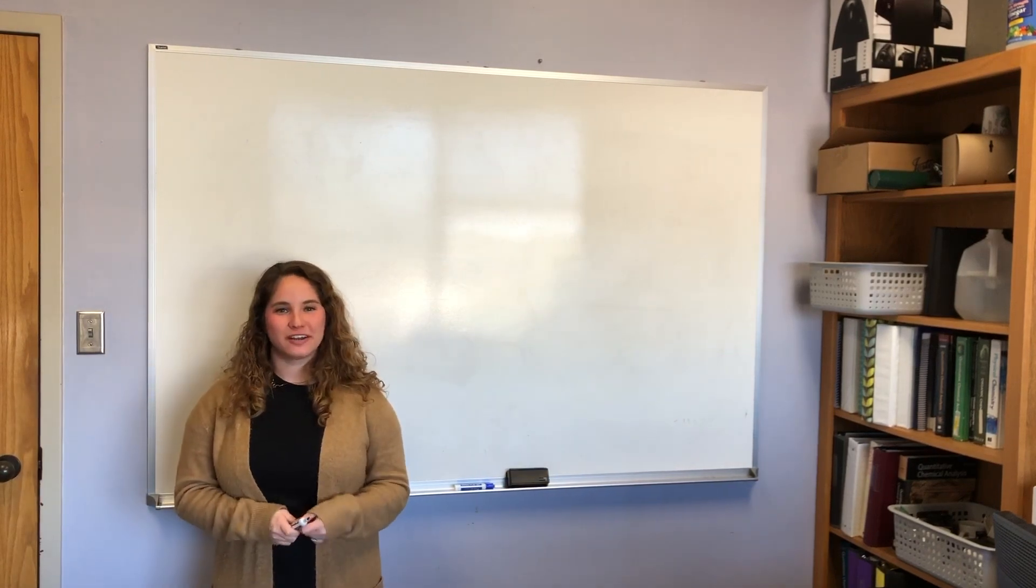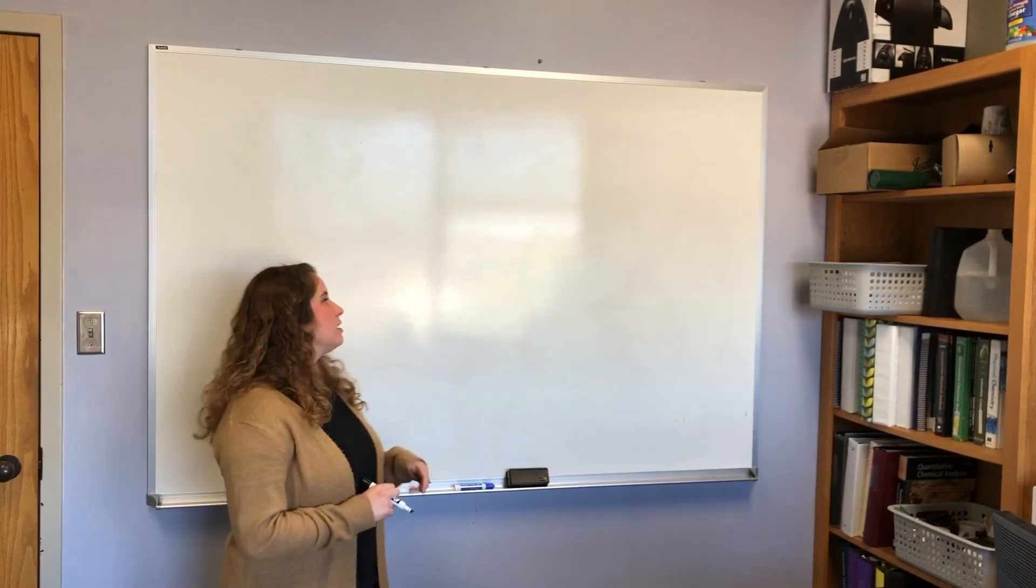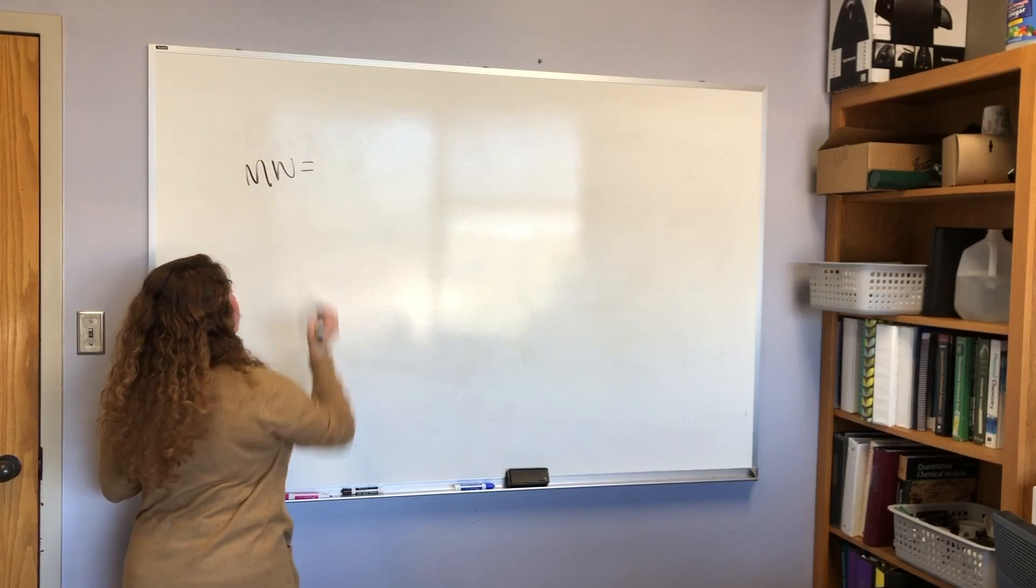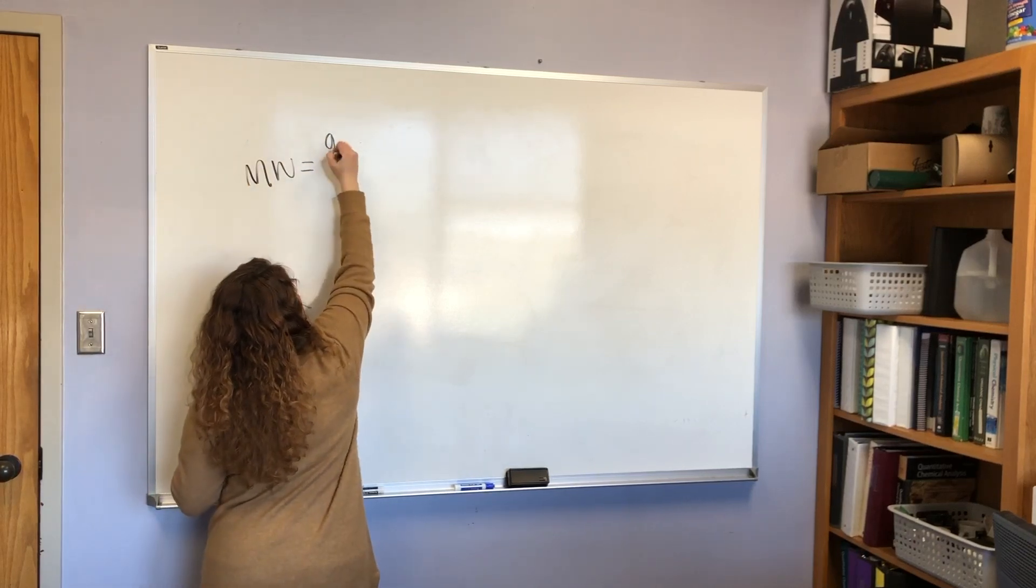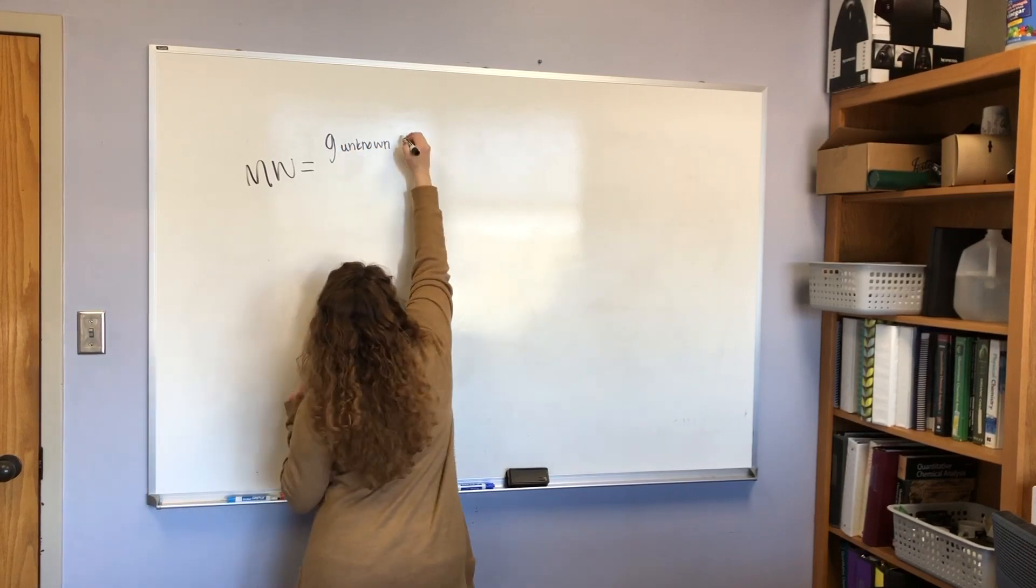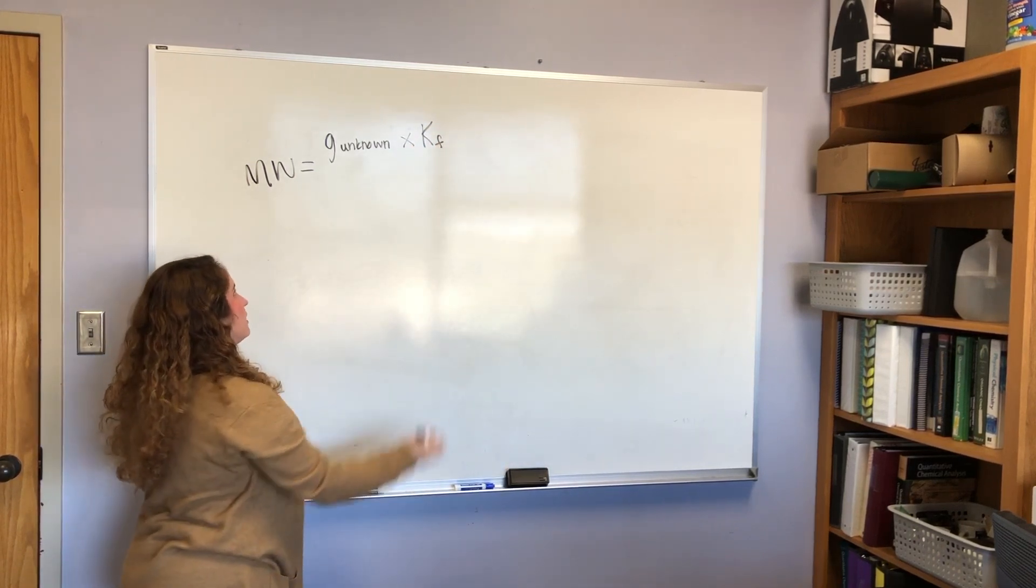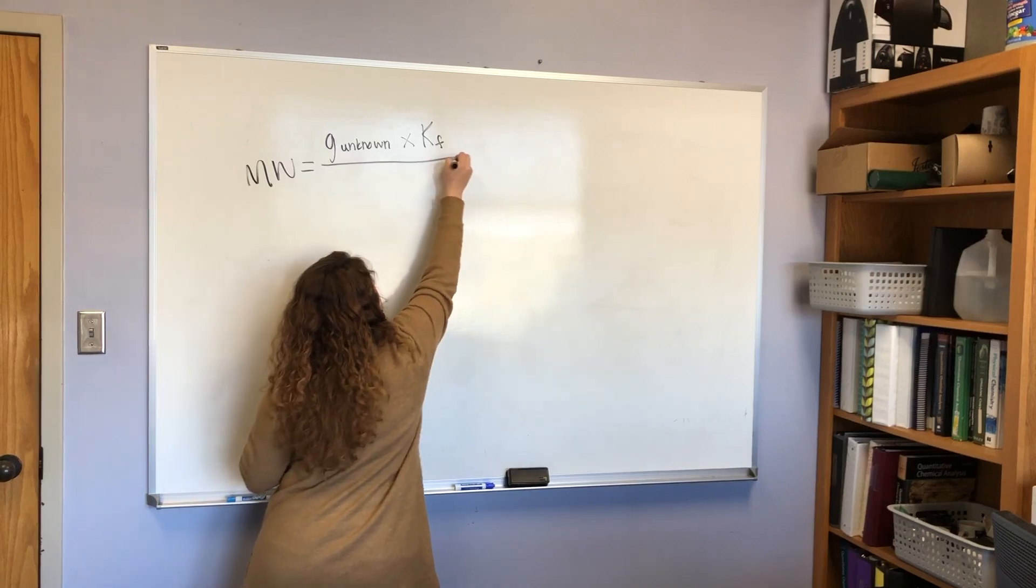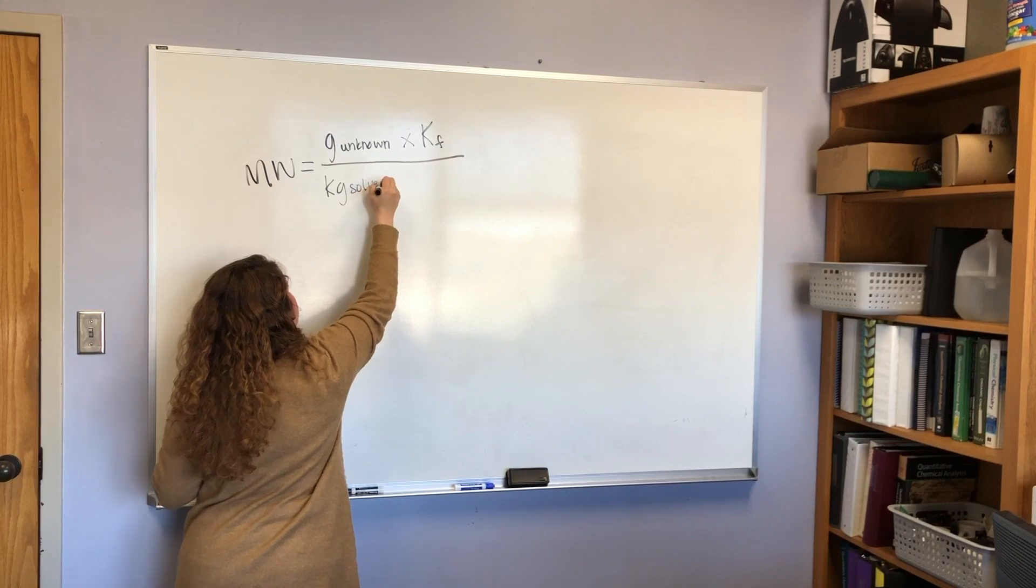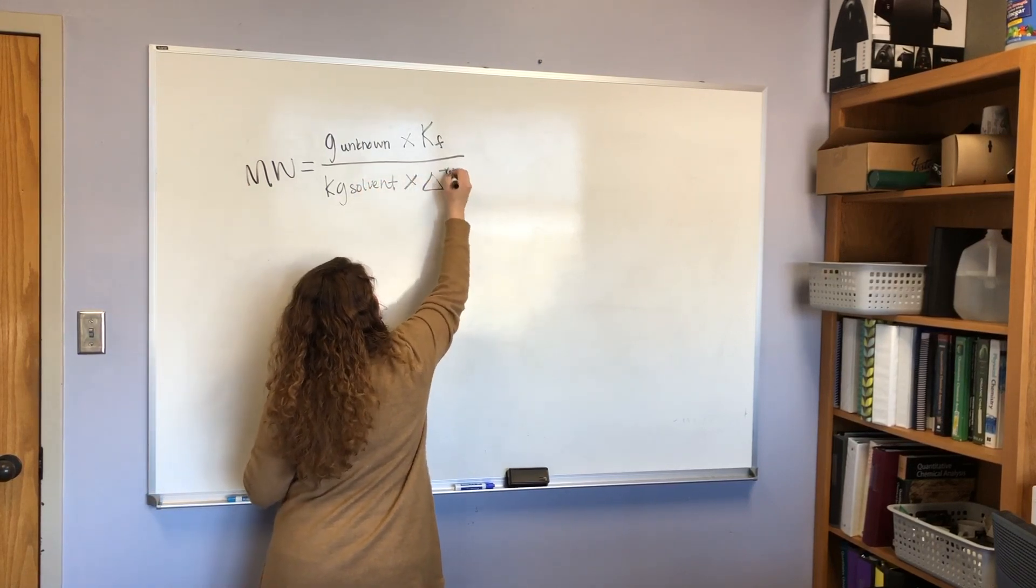For this next portion of the calculations, you have to determine the molecular weight of your unknown. So the equation for this is molecular weight is equal to grams of your unknown times the KF of your solvent over the kilograms of your solvent times your freezing point depression.